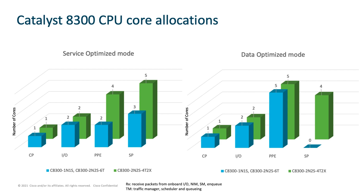Here is the CPU allocation for the Catalyst 8300 series edge platforms. The C8300-1N1S-42X, the C8300-1N1S-60, and the C8300-2N2S-60 models come with an eight-core CPU in total, defined in the blue blocks. The default allocation is what we call service optimization: one core for control plane, two cores for I/O, two cores for the packet processing engine, and three cores for the service plane, where you can host a full stack of SD-WAN security or third-party applications like Wireshark and more.